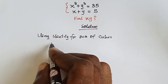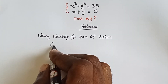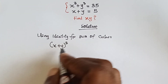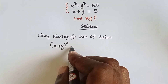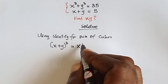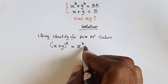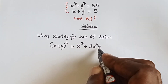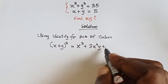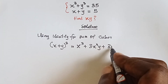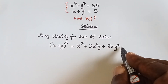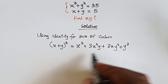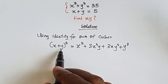So using the identity for sum of cubes, when we have x plus y raised to power 3, it will expand to x cubed plus 3x squared y plus 3xy squared plus y cubed. That is the sum of cubes expansion.